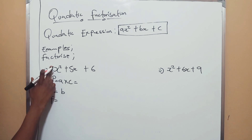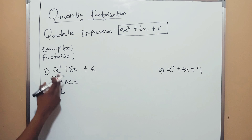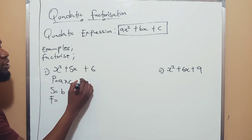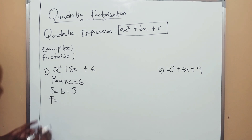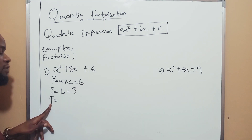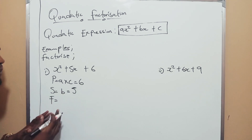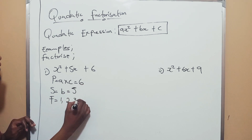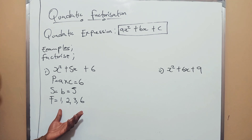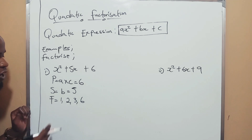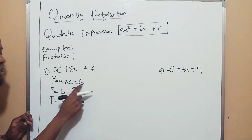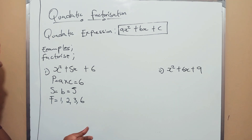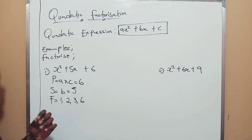So here, a is 1 — the coefficient close to x squared. What's your c? It's 6. So 1 times 6 is 6 — that's your product. And your b is 5, so your sum is 5. Now we go to our factors. Factors are numbers that can go into a number, so you find the factors of the product. What numbers can go into 6? You have 1, 2, 3, and 6. Now the key question: what two numbers, if you add or subtract them, give you the b, which is 5? And if you multiply them, they must give you the product, which is 6.